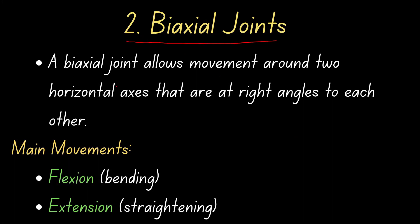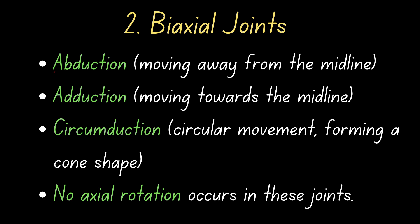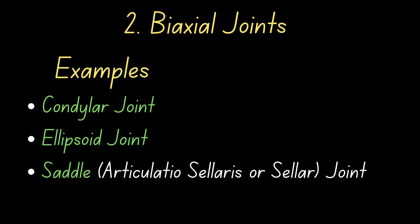Biaxial joints allow movement around two horizontal axes that are at right angles to each other. The main movements include flexion, extension, abduction, adduction, and circumduction, but there is no axial rotation. Examples are condylar joints, ellipsoid joints, and the saddle joint.